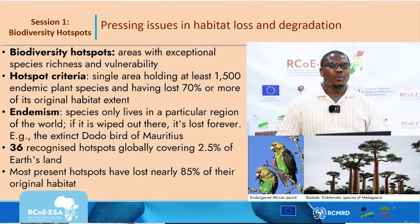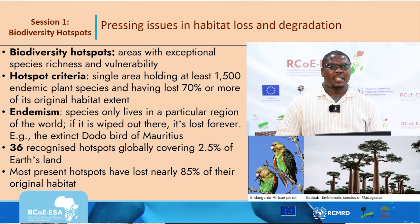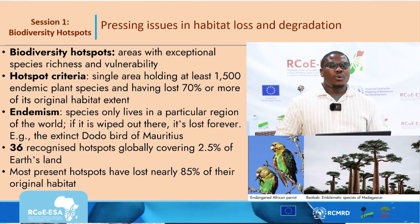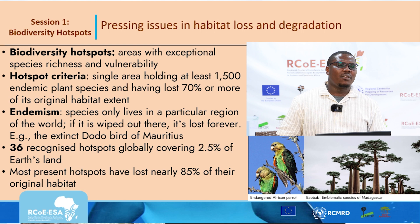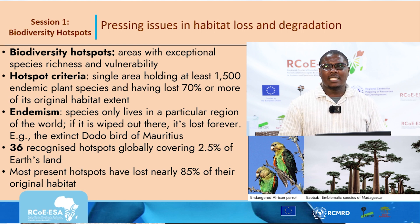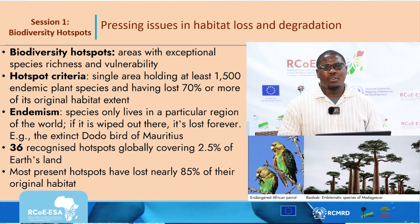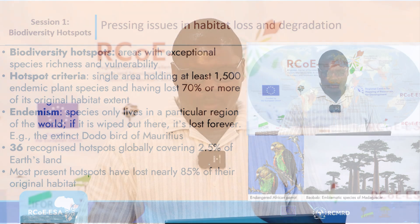Currently, we have about 36 hotspots globally recognized, and they occupy about 2.5 percent of the earth. These areas have been found to have lost almost 85 percent of their original habitat. So if an area meets the criteria — a vascular plant count of 1,500 and having lost almost 70 percent — then it becomes a hotspot area.